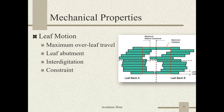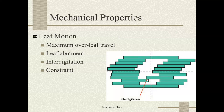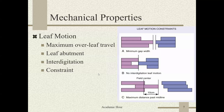Mechanical properties include leaf motion and maximum over-travel — how much the leaf can over-travel from the isocenter. Leaf abutment is the point where leaves cannot touch together; there is a space between the two leaves so they will not be damaged. Interdigitation is when the opposite bank leaf moves over another bank leaf. Other constraints include minimum width gap, and no integration of leaf motion, which is a limitation of some MLC systems.